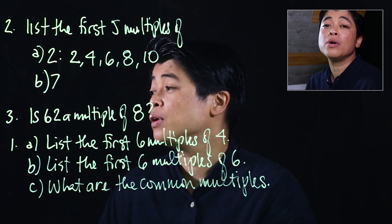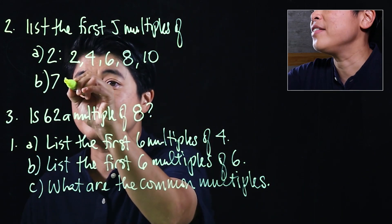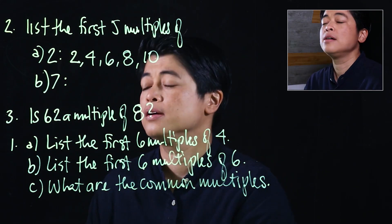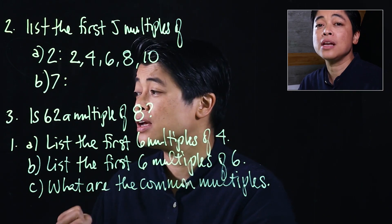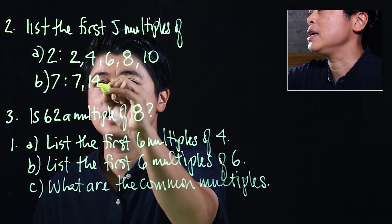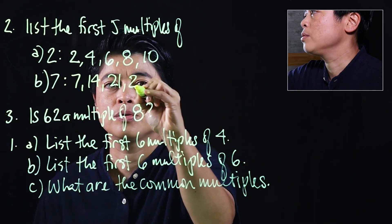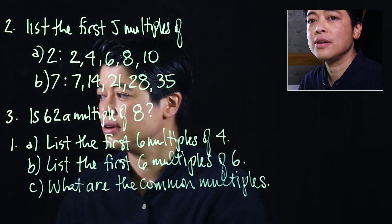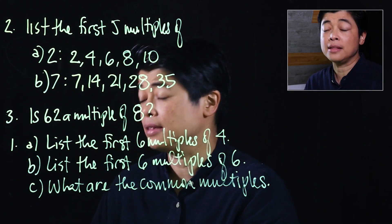For seven, the multiples of seven start counting with seven itself: 7, 14, 21, 28, and 35. That's when finger counting is important.